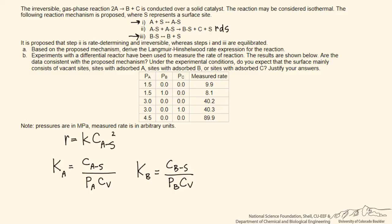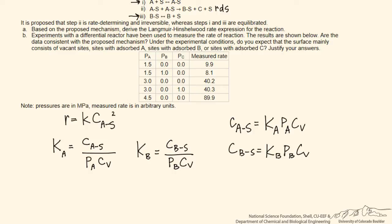From these equilibrium expressions, we can develop more useful expressions by solving for CA-S and CB-S. Now we'll do a site balance: the total concentration of sites equals the concentration of vacant sites plus sites containing A plus sites containing B. Plugging in the expressions for absorbed species and factoring out, we get CV times (1 + KA*PA + KB*PB).